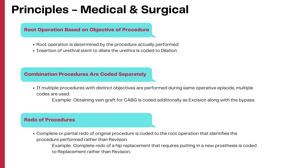Always focus on the objective or the actual intent of the procedure to select the root operation correctly. For example, insertion of a urethral stent is coded to dilation since the objective is to open up the urethral stricture. Additionally, combination or multiple procedures in PCS are coded individually — there is no concept of bundled procedures. For example, harvesting a saphenous vein graft when performing a coronary artery bypass grafting procedure would be coded additionally as excision of vein graft, apart from the CABG procedure itself.